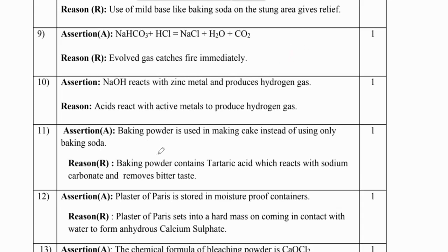Question number 10: NaOH reacts with zinc metal and produces hydrogen gas. The reason says acids react with active metals to produce hydrogen gas. Both statements are correct, but the reason is not the correct explanation of the assertion, so B is the answer.